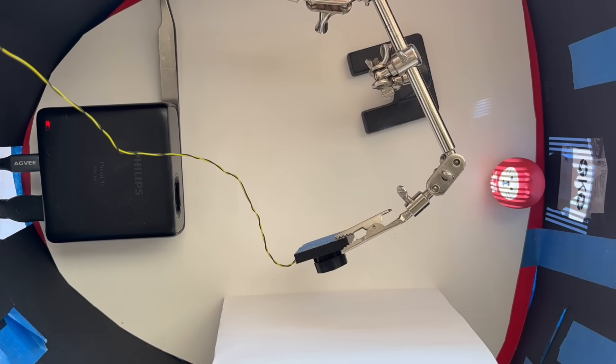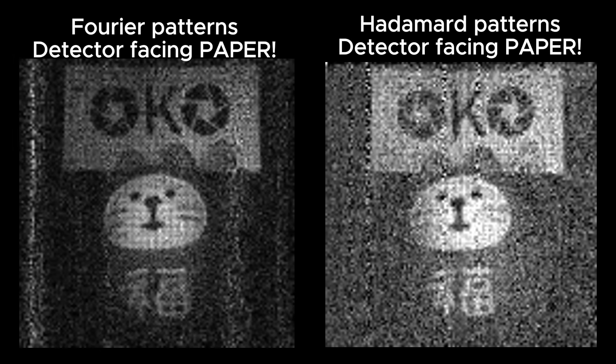I kept the photo detector in the same place and tried reconstructing an image using compressed sensing. This seemed even more challenging because the illumination patterns aren't spatially confined on the object. But look at these reconstruction results from using the sinusoidal and Hadamard patterns. We get an image of the scene from the same perspective. It seems unbelievable at first.